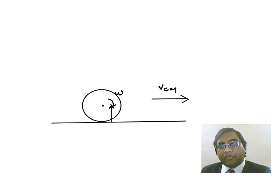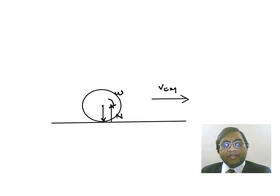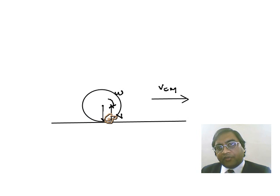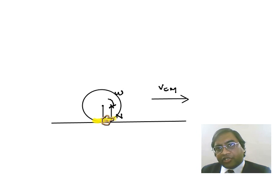The normal reaction is shifted towards the right side, so it is acting away from the center of mass. The curvature you see here won't be spherical — it would be deformed. So imagine this to be somewhat flat, with the normal reaction passing from the right side in this manner.